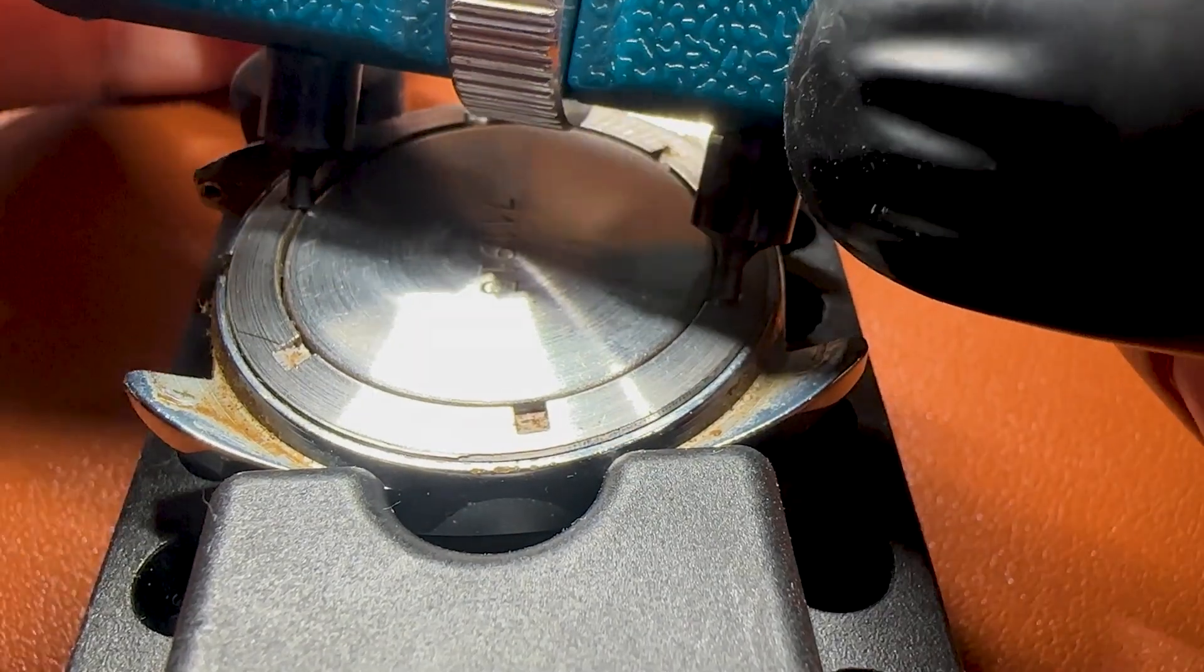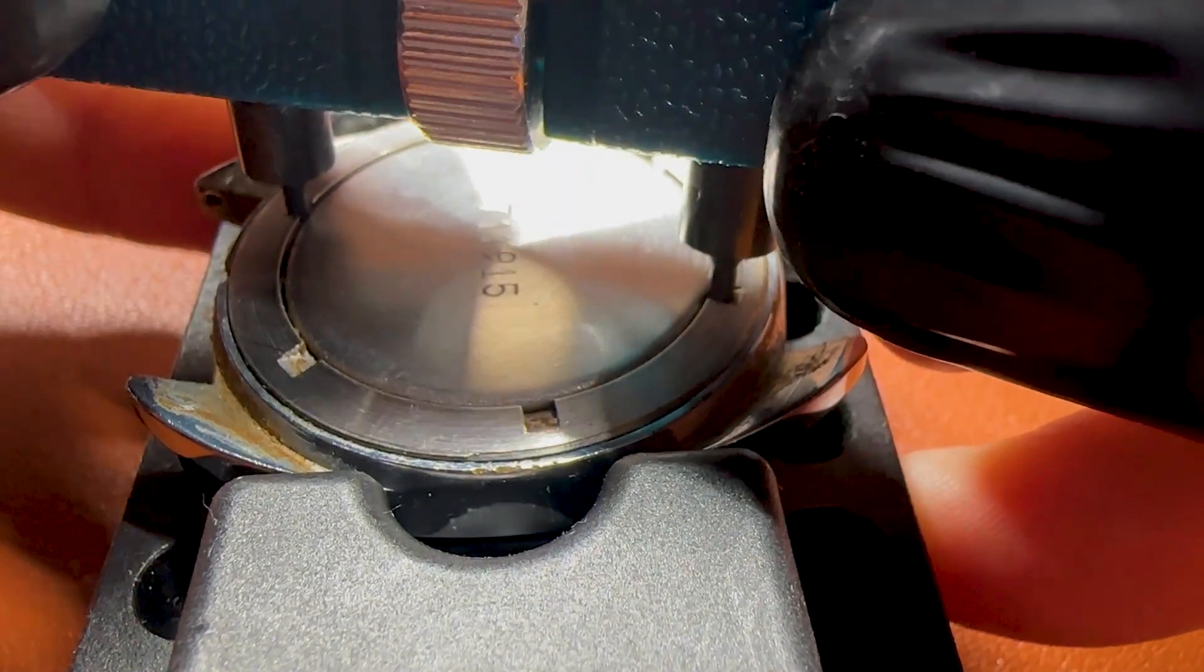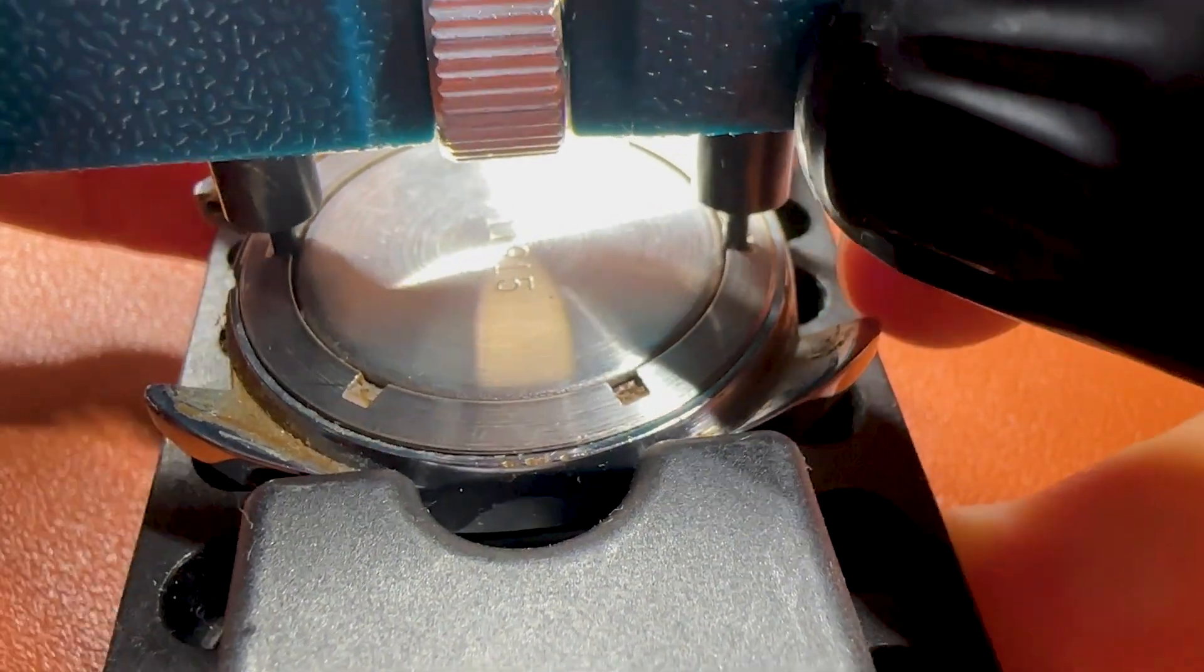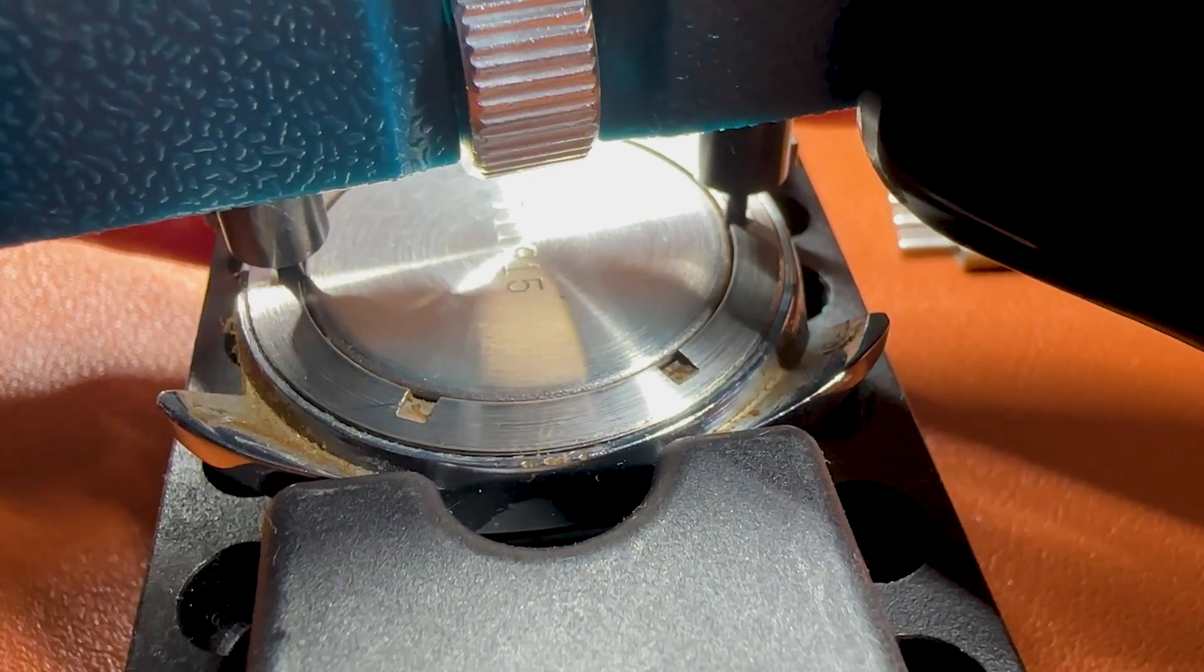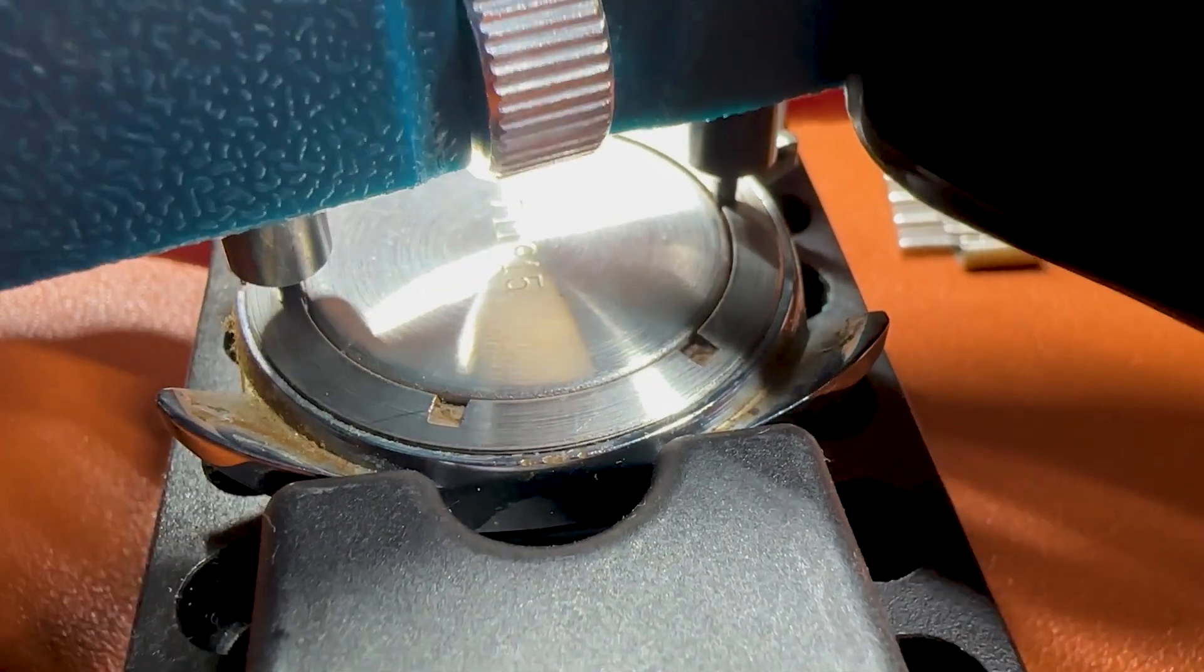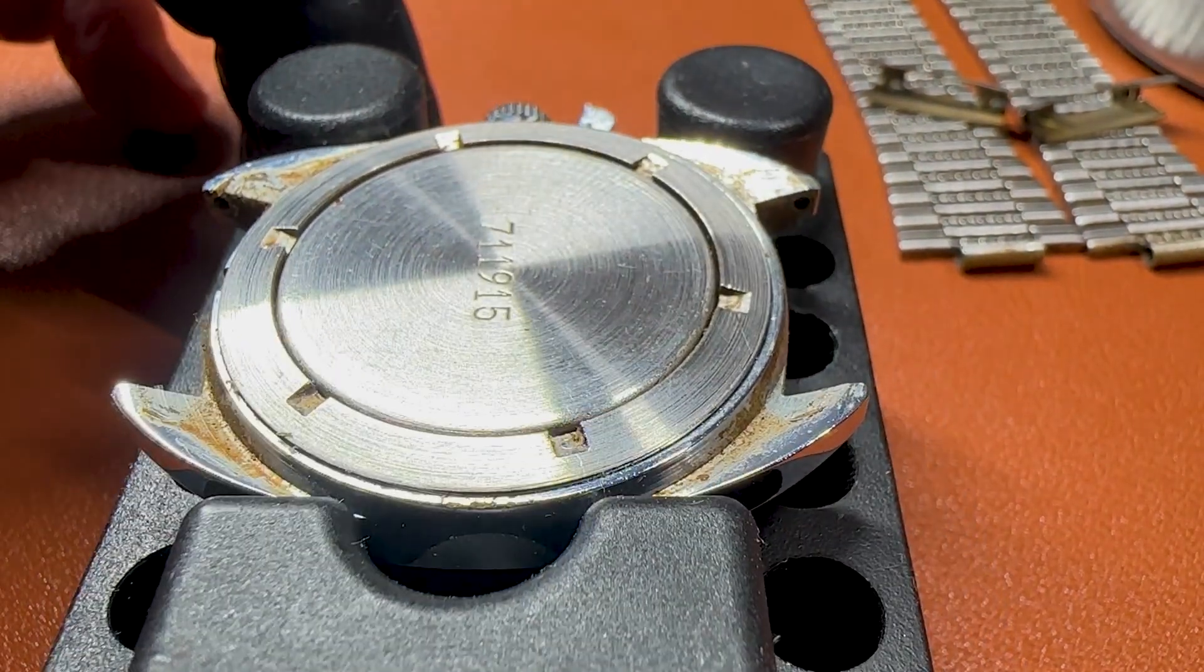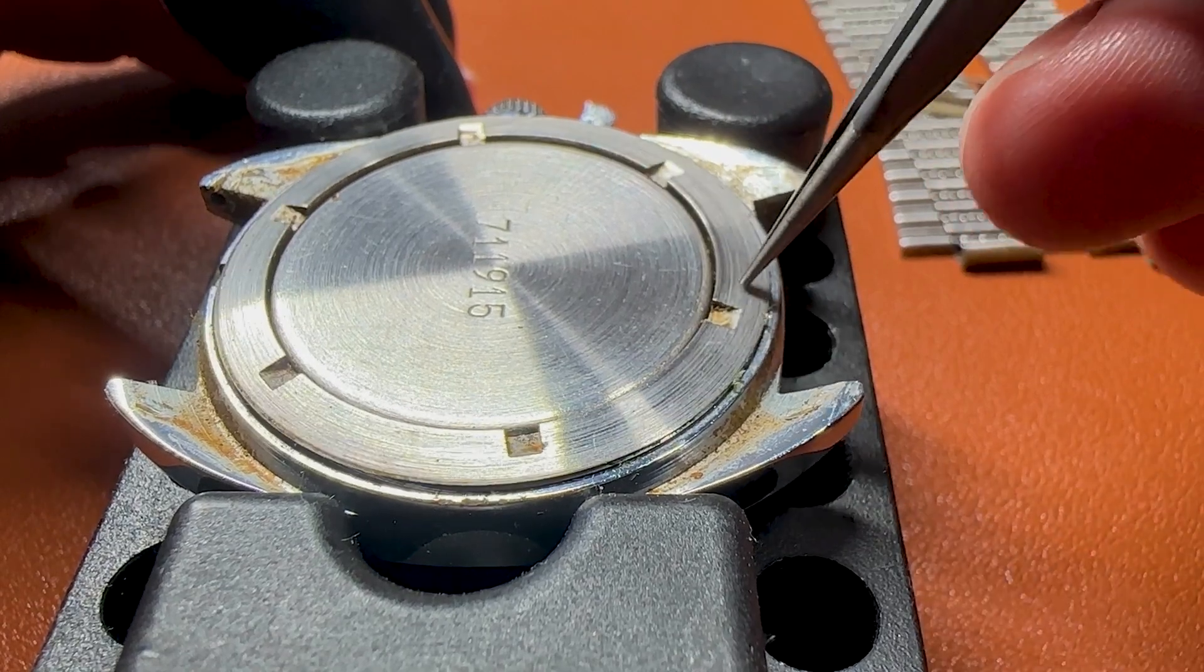Let's remove the back case. It's interesting because only the outer circle is moving. So we have a back case that is made from two parts. We also have a serial number.